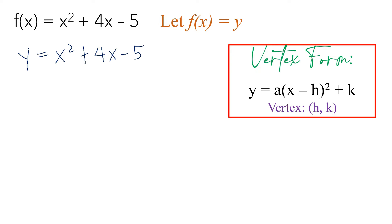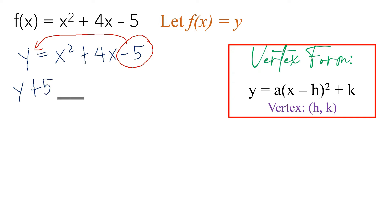To convert it to vertex form, the first thing you have to do is transpose the constant — which is negative 5 — to the other side, and then later we will return it again. So now we have y, and when you transpose negative 5 to the other side, it will become positive 5. Leave a space, then equals, and copy the rest: x squared plus 4x.